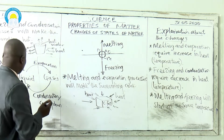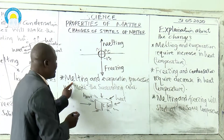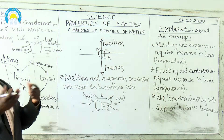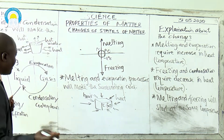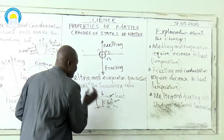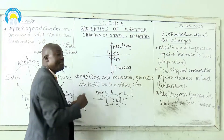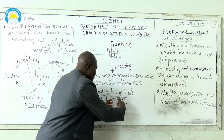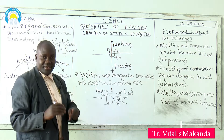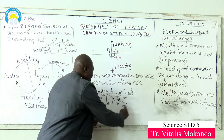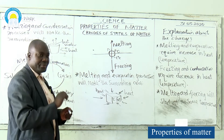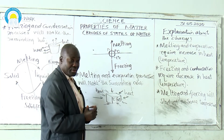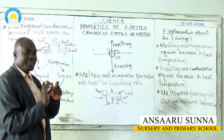Under these changes of state of matter, melting and evaporation processes will make the surrounding cold. For example, take cooking fat — place it somewhere where there is heat, maybe from the sun. That heat will move near the cooking fat, the cooking fat will become hot and start changing into liquid, but the surrounding temperature will reduce and go down. That's why we say melting and evaporation processes make the surrounding cold.